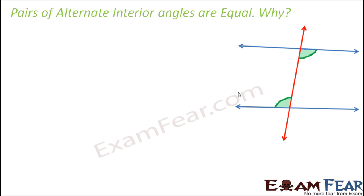Let us first try to understand why the alternate interior angles are equal. We want to prove why angle 1 equals angle 2. There is a mathematical proof to verify this; however, that proof will involve congruence theorems which you will learn in higher classes — in class 9. For now, I want to explain why this relationship holds true only for parallel lines and not for non-parallel lines.